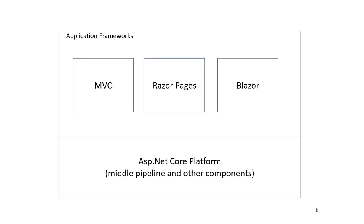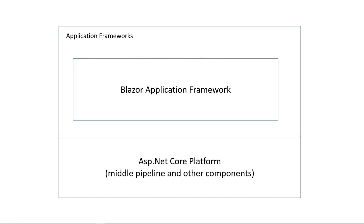When creating MVC web applications or web APIs, you work with model classes, Razor views, and controller methods. When creating RazorPages applications, you work with Razor views and their corresponding code-behind model classes. When creating Blazor applications, you work with Blazor components, also known as Razor components. In the next lecture, let's see how the Blazor application framework works while we create our first Blazor application.